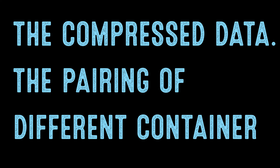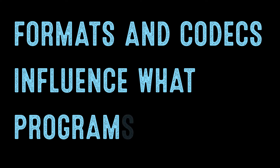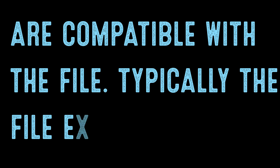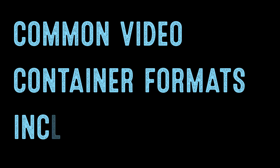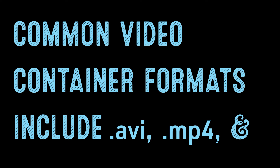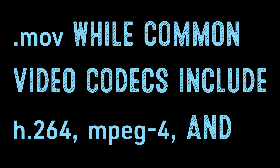The pairing of different container formats and codecs influences what programs and devices are compatible with the file. Typically, the file extension name will clue you in as to what is the appropriate program that can open the file. For example, .mov is a QuickTime movie format and was developed for that application. Common video container formats include .avi, .mp4, and .mov, while common video codecs include H.264, MPEG-4, and DivX.